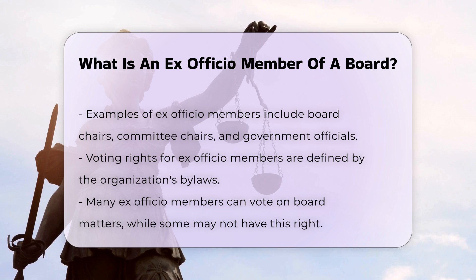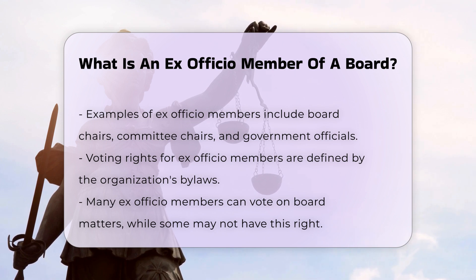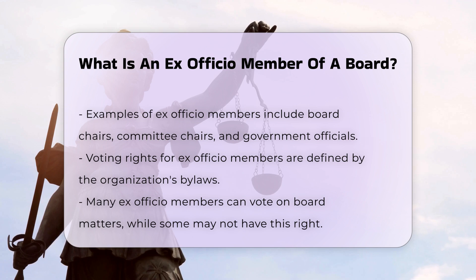Participation and accountability. Ex officio members participate in discussions, debates, and decision-making processes. They are expected to act in the best interests of the organization and may serve on committees or subcommittees. Their membership on the board typically ends when they cease to hold the office that granted them ex officio status.